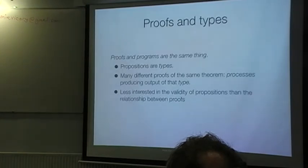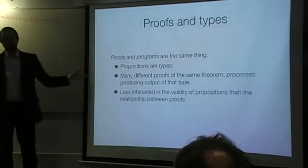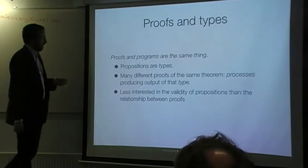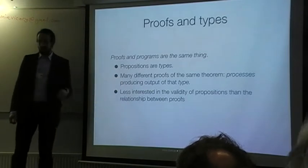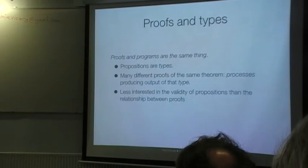If we add this idea of propositions as types, we can say that proofs and programs are the same thing. So the propositions are the output types of your program. In particular, you can have different proofs of the same program, meaning different processes producing the same type of outputs. And when you have more computational stuff in the things, the less interesting would be the validity of the propositions.